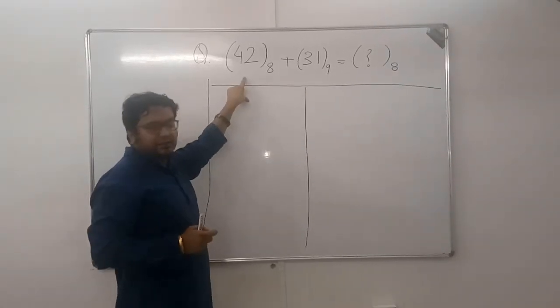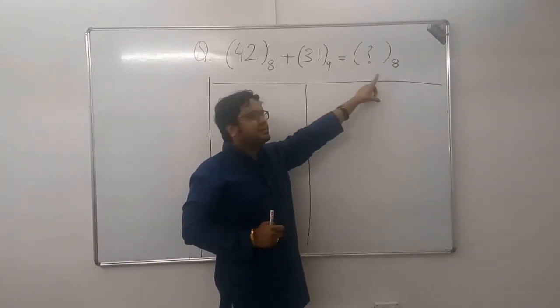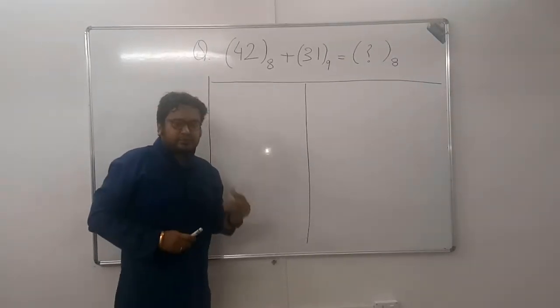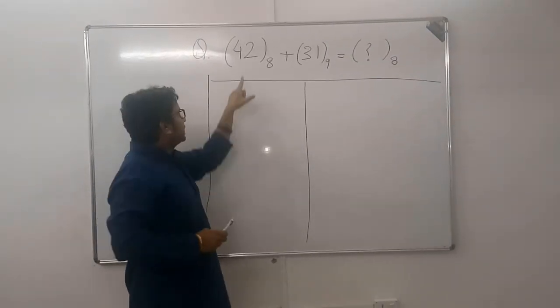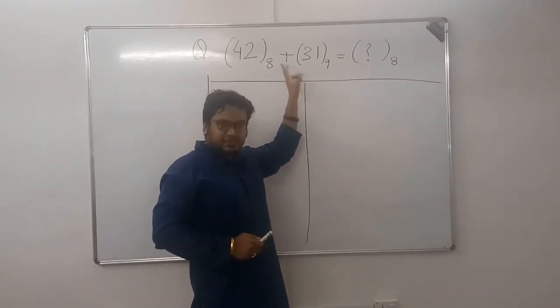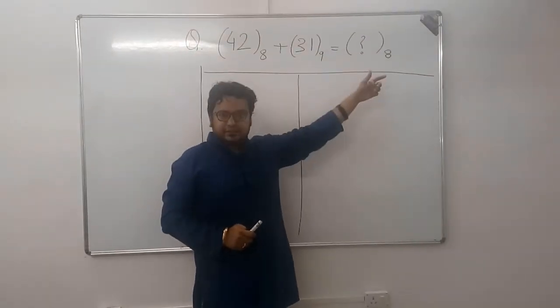There is a summation given here, one number in base 8, other in base 9, and the answer has to be in base 8. The traditional approach of solving such questions is: convert both of these to base 10, do the summation in base 10, get the answer, and then convert the sum from base 10 to base 8.